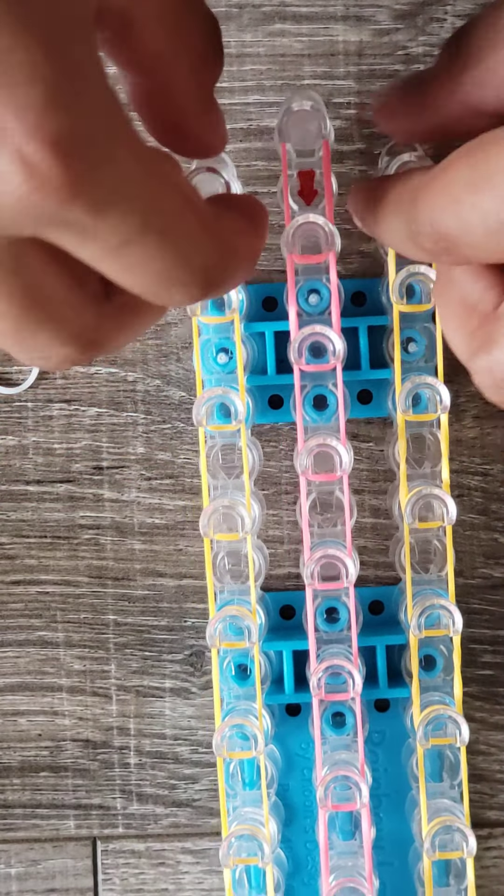Okay so remember skip these three pegs and now you're gonna take your band, your other color. You're gonna go here, there, there, so you're kind of making a triangle. You're gonna do the same thing here to there.